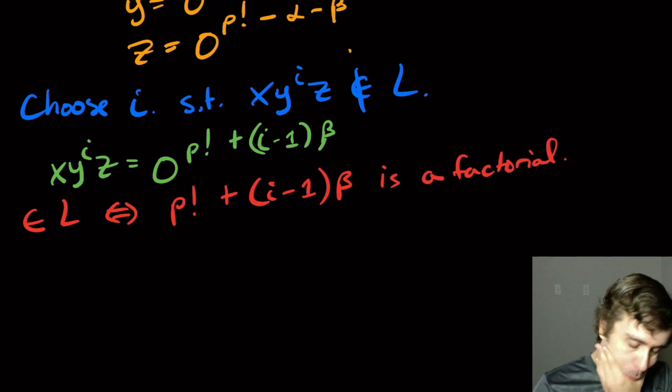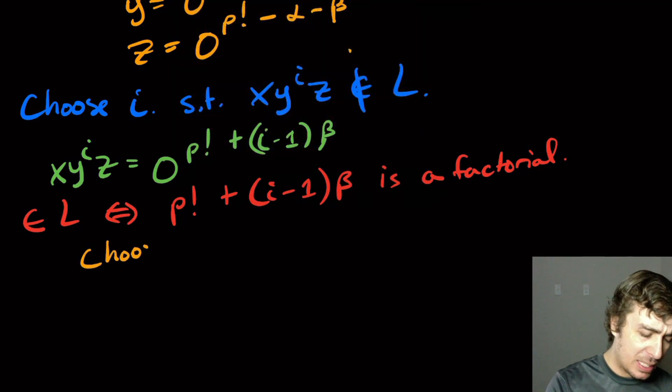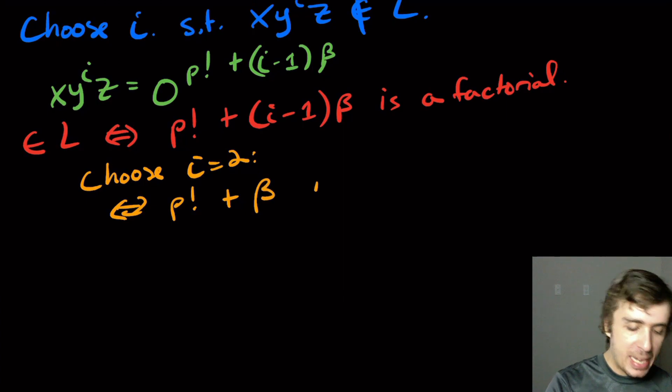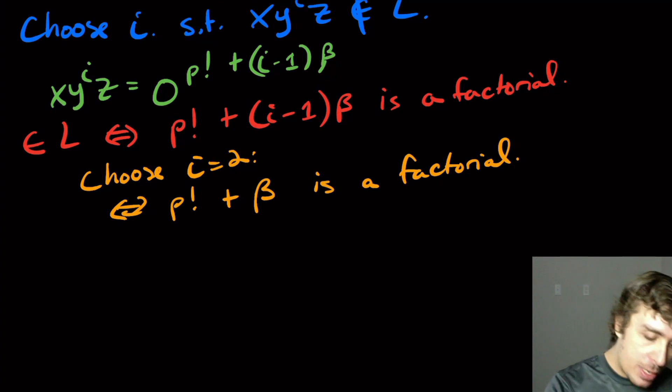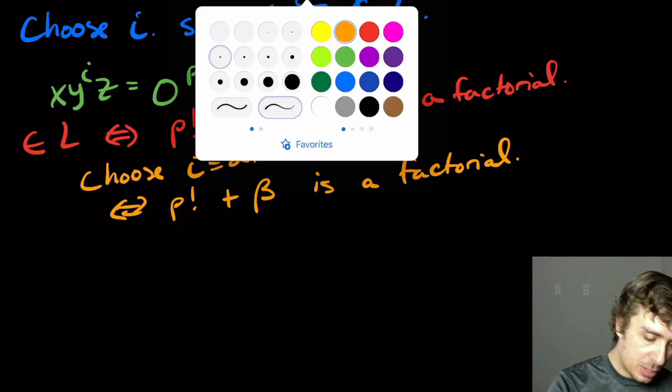Okay, well, let's see. So if I, let's just pick i equal to two just to see. It'll turn out to work, but let's see. Let's choose i equal to two. Then that's effectively saying P factorial plus a single beta is a factorial. Well, we know that beta is at least one. So it's not equal to that factorial right there. So let's write that down.